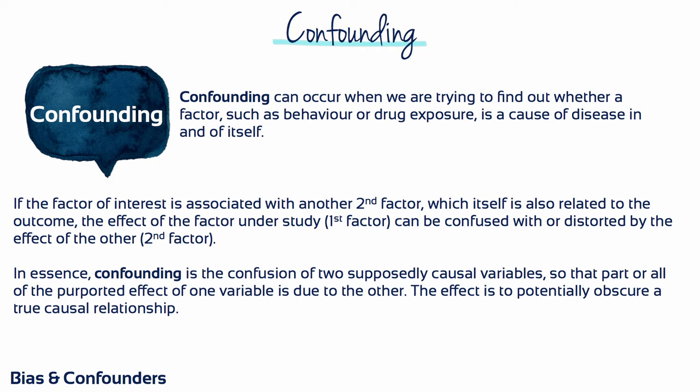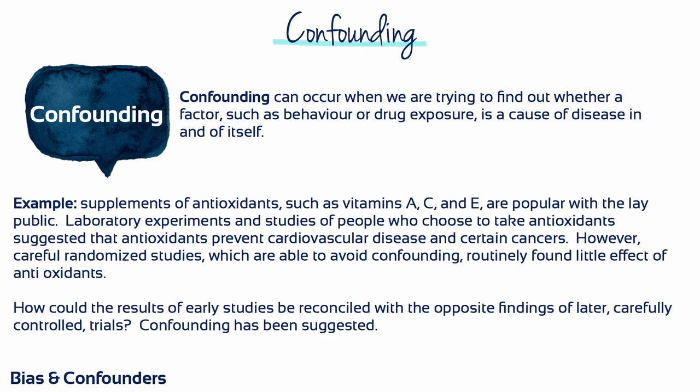The effect is to potentially obscure a true causal relationship. For example, supplements of antioxidants such as vitamins A, C and E are popular with the lay public. Laboratory experiments and studies of people who choose to take antioxidants initially suggested that antioxidants prevent cardiovascular disease and certain cancers. However, careful randomised studies, which are able to avoid confounding, routinely found little effect of antioxidants. In fact, when results of these studies were combined, use of antioxidants, especially at high doses, was associated with small increases, not decreases, in death rates.